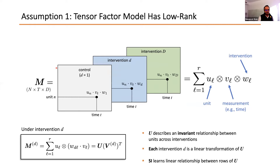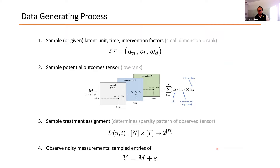With low rank, each slice of the tensor for a different intervention can be written as U·V^T, where U remains the same across slices but V changes. This U being shared across slices means each row of U corresponds to a unit represented as a low-dimensional vector. If it's R-dimensional and there are many units, any unit can be written as a linear combination of other units — and that is exactly what enables the linear relationship in synthetic interventions.